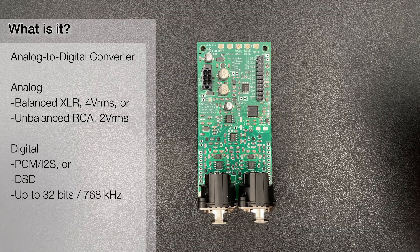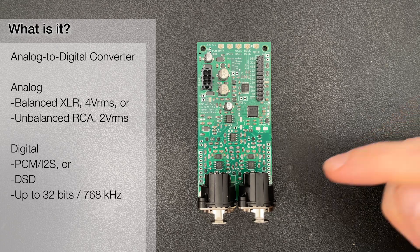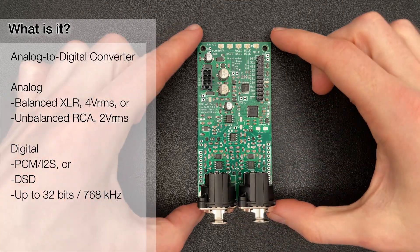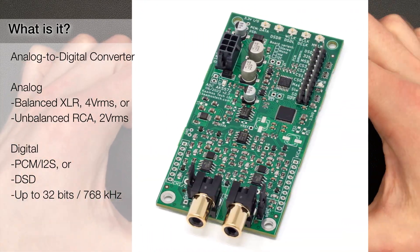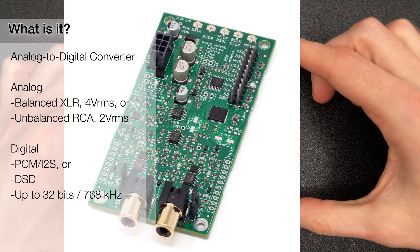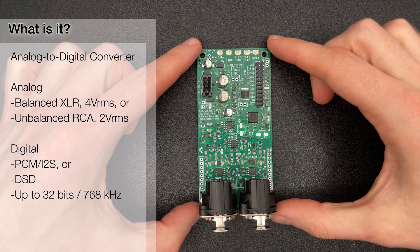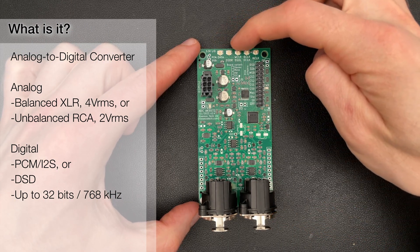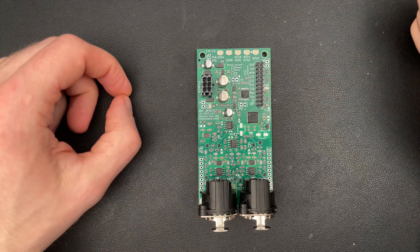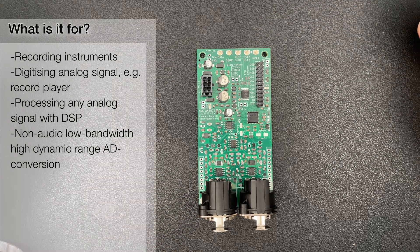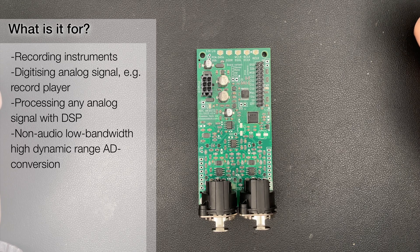This is an AD converter, so it converts analog signal coming to the XLR, or you could have RCA inputs as well, to digital I2S or DSD outputs which are provided here with the UFL connectors. These days almost all processing is digital so an ADC is needed somewhere in the system. Mostly it's in recording — in hi-fi we usually don't need ADCs unless you want to process an analog source such as a record player.